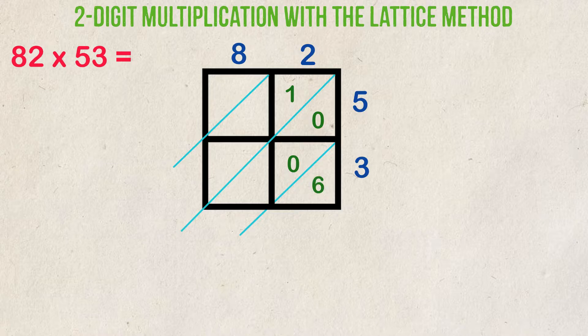We multiply 8 times 5, which is 40. We put the 4 on this side, and the 0 on this side. Finally, we multiply 8 times 3. We put 2 here and 4 here.